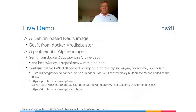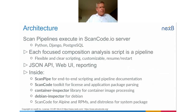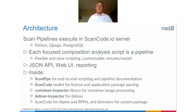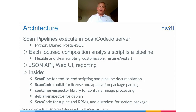The architecture of ScanCode.io: we have scanning pipelines that execute on a server. The server is primarily based on Python and Django, and uses PostgreSQL as the backing database. We also use Redis for caching as a task queue. Each focused script becomes a pipeline — you can think about the specific steps you'd want to achieve in the context of your organization as something you can very easily script and extend.